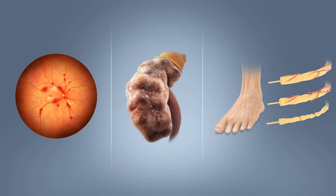Type 1 diabetes mellitus is characterized by loss of the insulin-producing beta cells of the pancreatic islets, leading to insulin deficiency. This type can be further classified as immune-mediated or idiopathic. The majority of type 1 diabetes is of the immune-mediated nature, in which a T-cell-mediated autoimmune attack leads to the loss of beta cells and thus insulin. It causes approximately 10% of diabetes mellitus cases in North America and Europe. Most affected people are otherwise healthy and of a healthy weight when onset occurs. Type 1 diabetes can affect children or adults, but was traditionally termed juvenile diabetes.